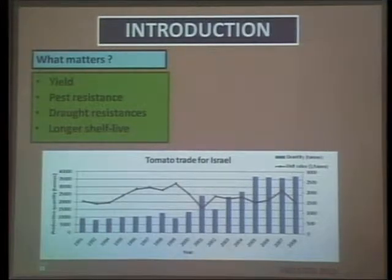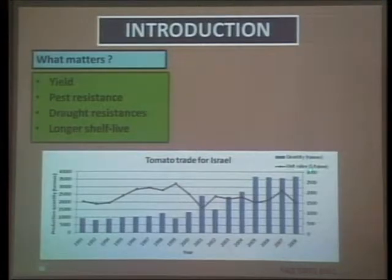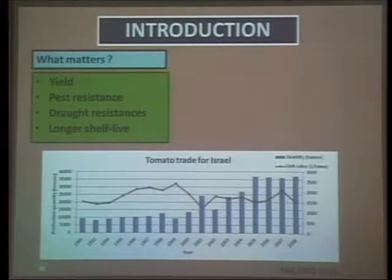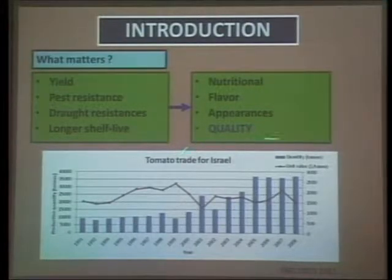These traits worked well for breeders and growers since the early 90s — every year production was increasing, and so was the value per production. But in the last couple of years, production has more or less become stable. The literature points out this is mainly because those traits have reached their final potential. Therefore, growers must look for traits that can increase the value of their production, mainly related to nutritional effects, flavor, appearance, and overall tomato fruit quality.